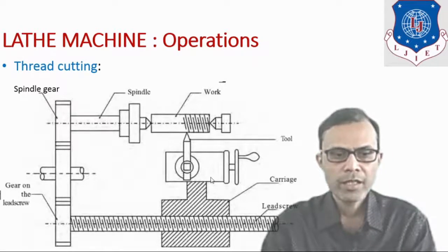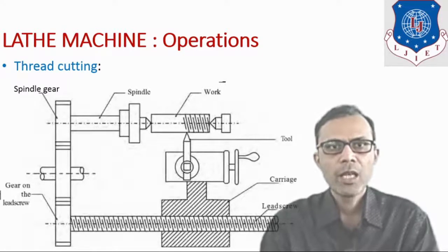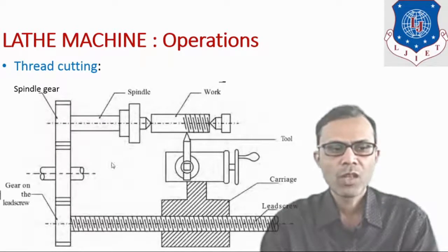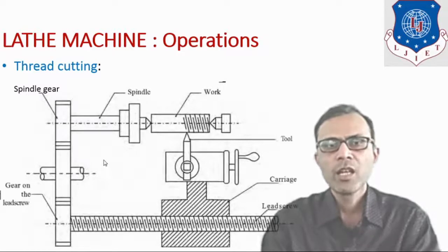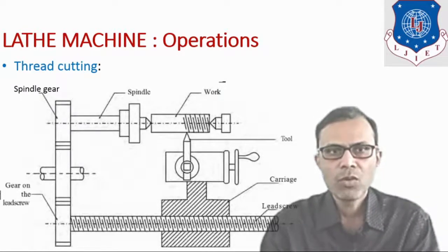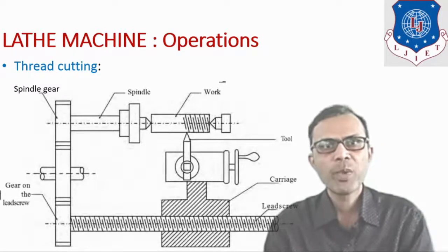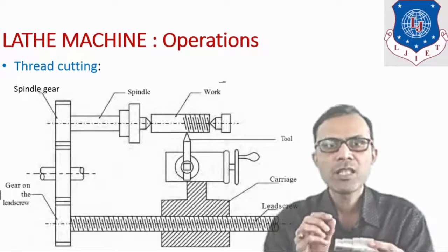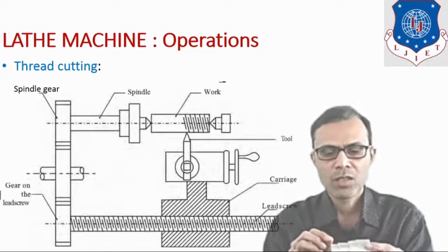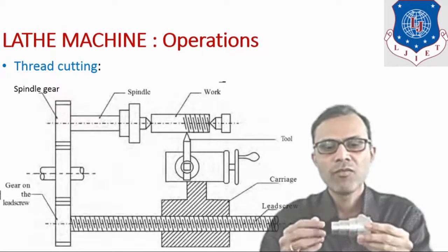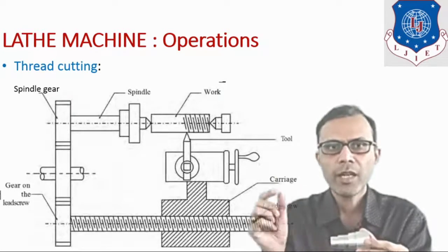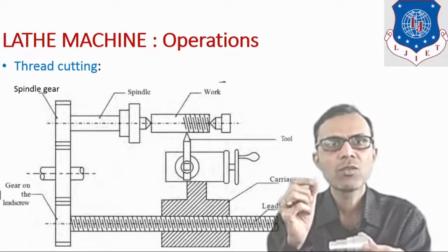Here you can see it is the carriage assembly. One important parameter is that if we want to perform a thread cutting operation, we have to engage this carriage assembly with the lead screw. The power will be transmitted from the headstock spindle to the lead screw with the help of change wheels or change gears. It is necessary to calculate the change wheel teeth in order to produce a screw of the required pitch. Pitch is defined as the distance between two successive threads. For example, if the pitch of the screw to be cut is 2 mm, then when the workpiece revolves by one rotation, the advancement of the tool should be equal to 2 mm.